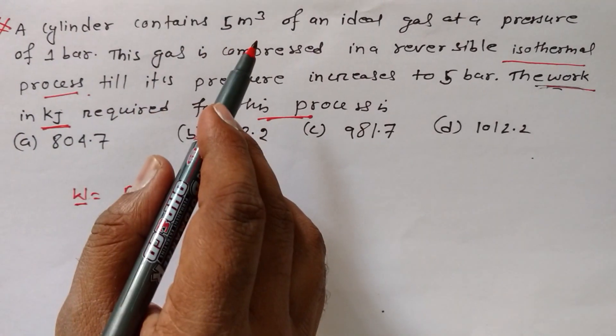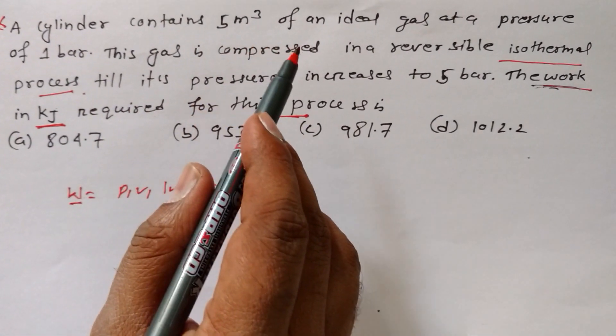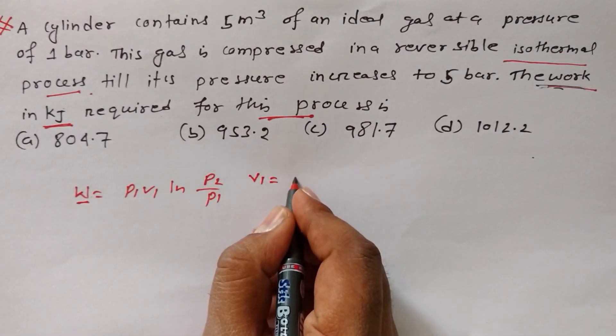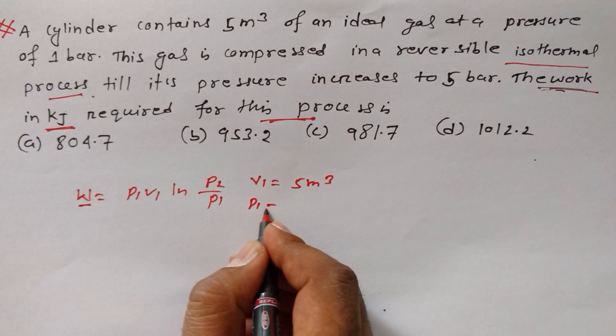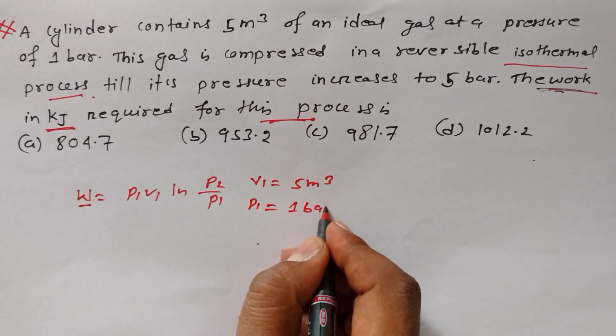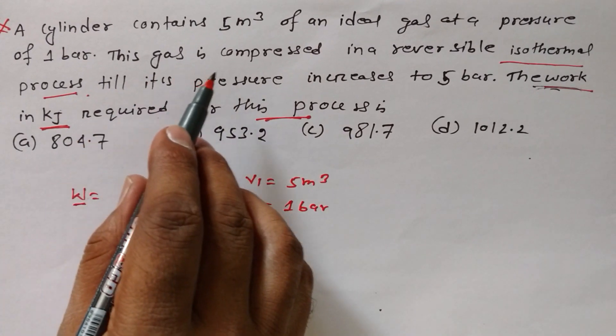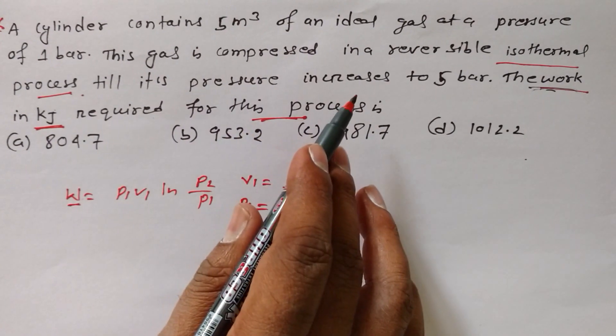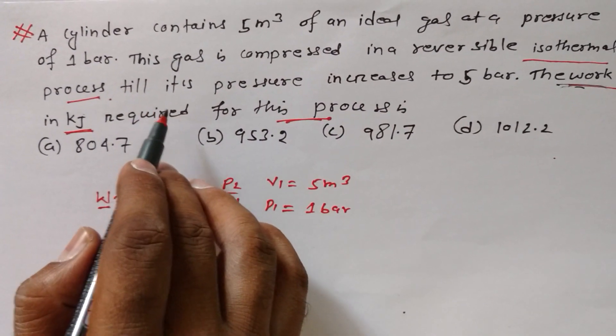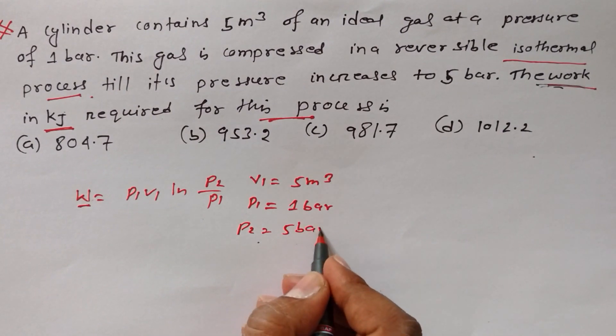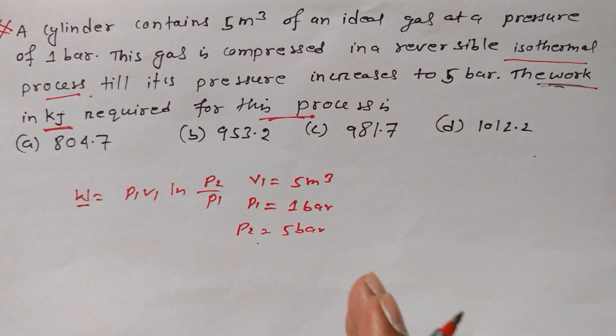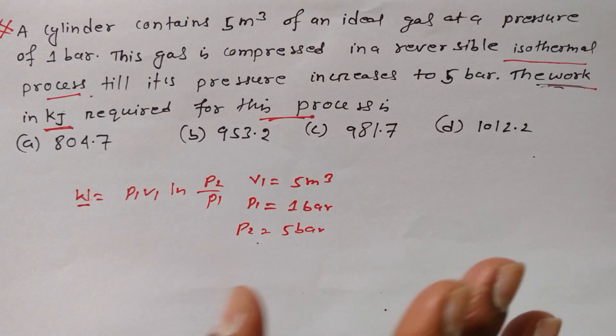A cylinder contains 5 meter cube of an ideal gas, so that must be V1, 5 meter cube, at a pressure of 1 bar, P1 is equal to 1 bar. This gas is compressed in a reversible isothermal process till its pressure increases, that means P2 is equal to 5 bar. The work done in kilojoule.